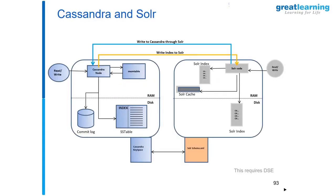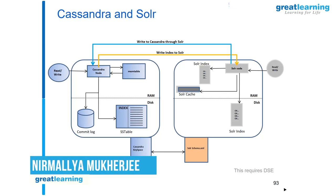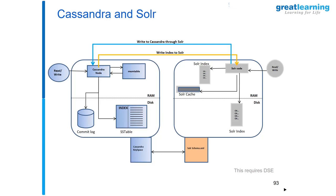Cassandra and Solr integration comes out of the box in the distribution for DataStax Enterprise. DataStax Enterprise is the commercial arm of Cassandra, just like Hortonworks is for Hadoop and Databricks is for Spark. It gives you a couple of integrations out of the box: number one, search engine; number two, Hadoop; number three, Spark — all of them pretty much out of the box.